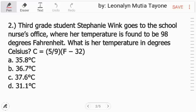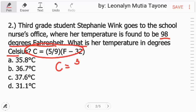Number two, third grade student, Stephanie Wink, goes to the school nurse's office where her temperature is found to be 98 degrees Fahrenheit. What is her temperature in degrees Celsius given ang formula? So, C is equals to 5 over 9. Ang Fahrenheit natin ay 98 minus 32.